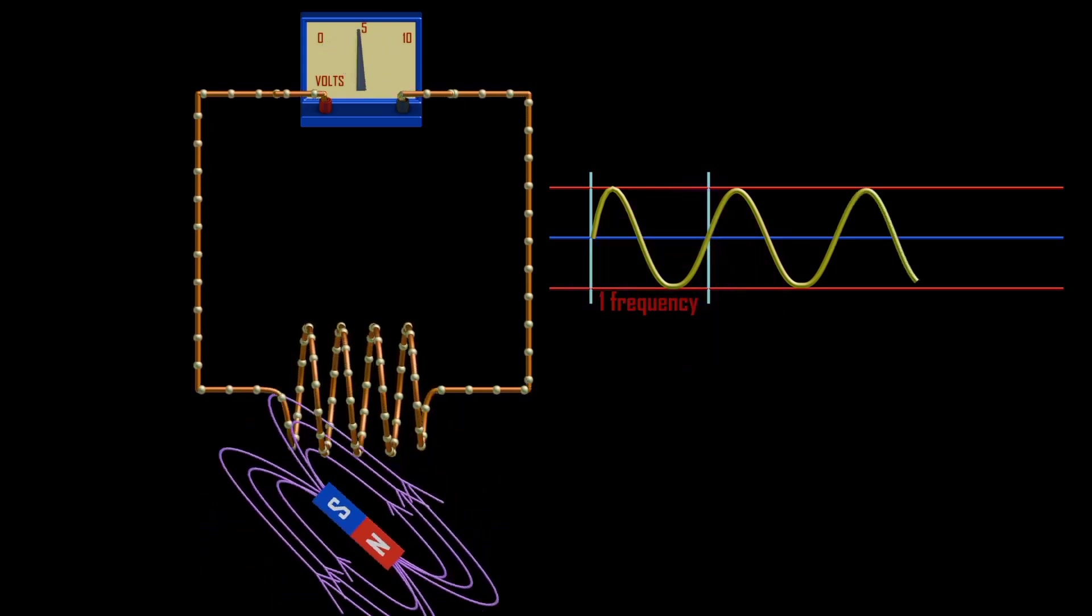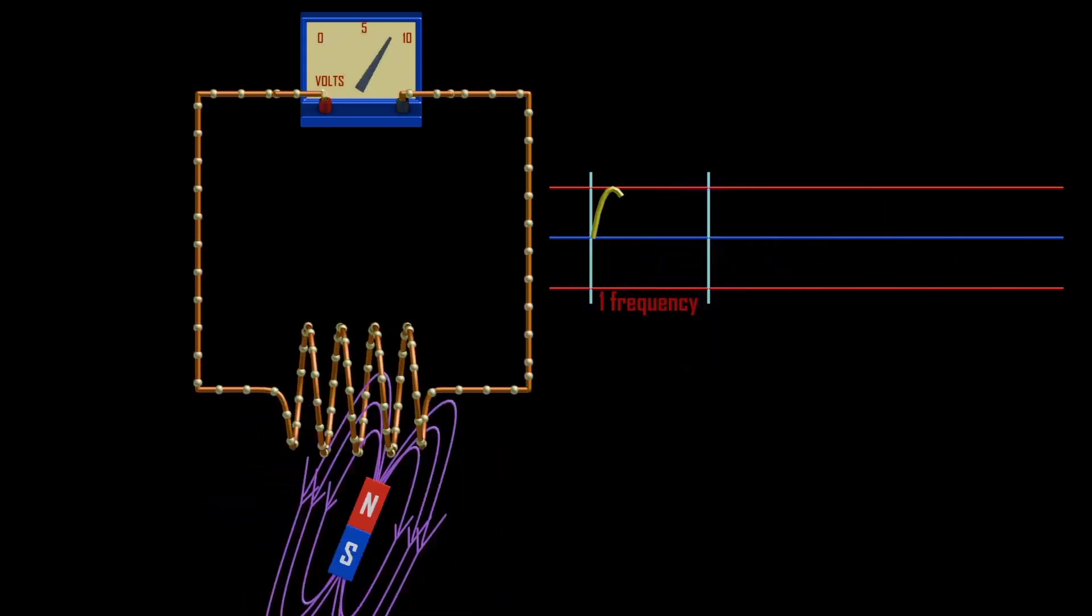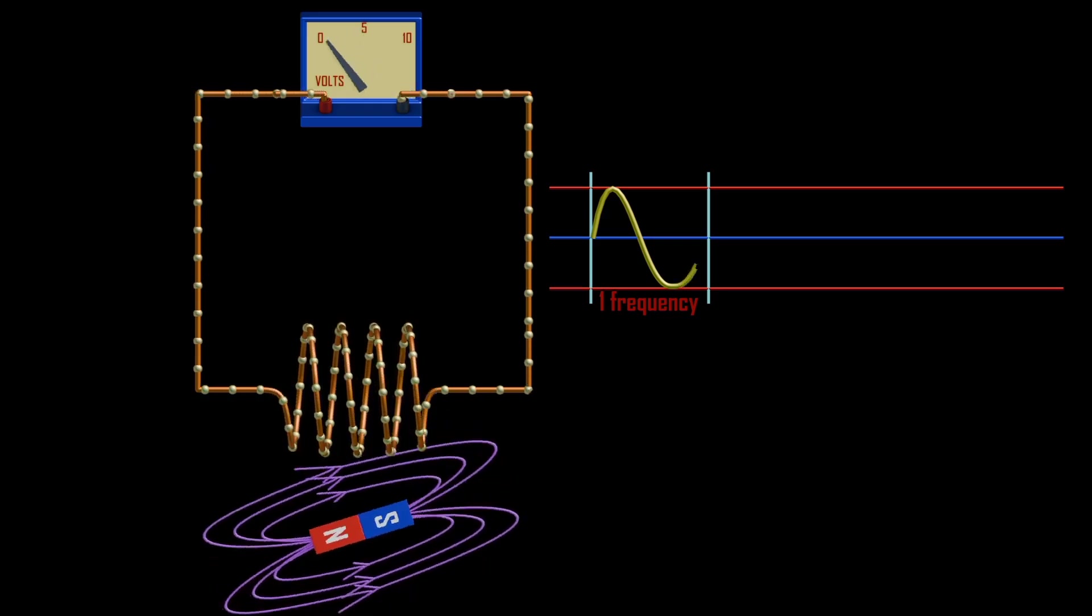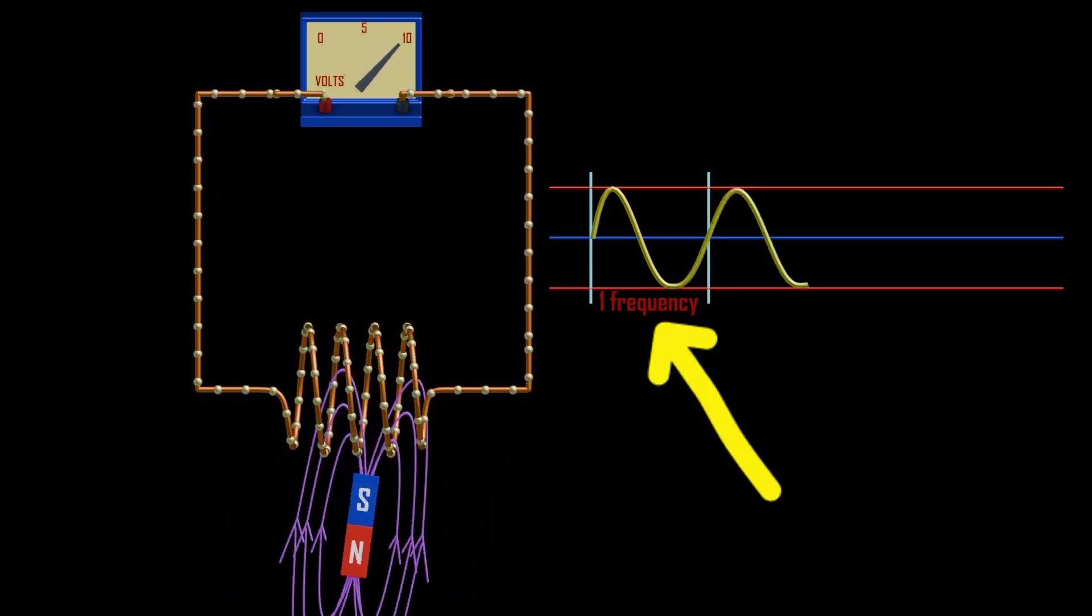Also something to note is that, when the magnetic field cuts the coil with both its south and north pole, we will form one revolution and this is what we called frequency.